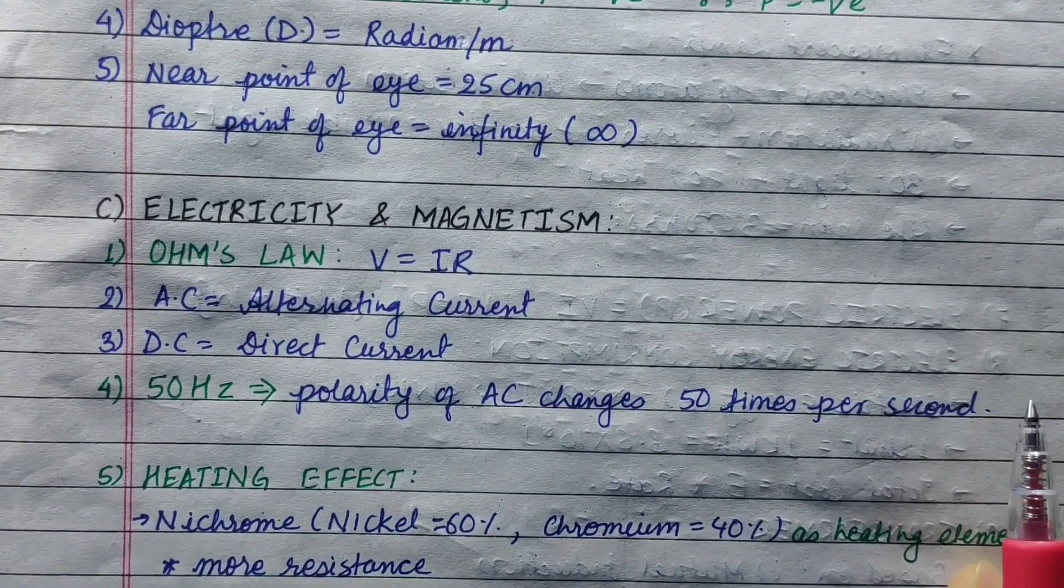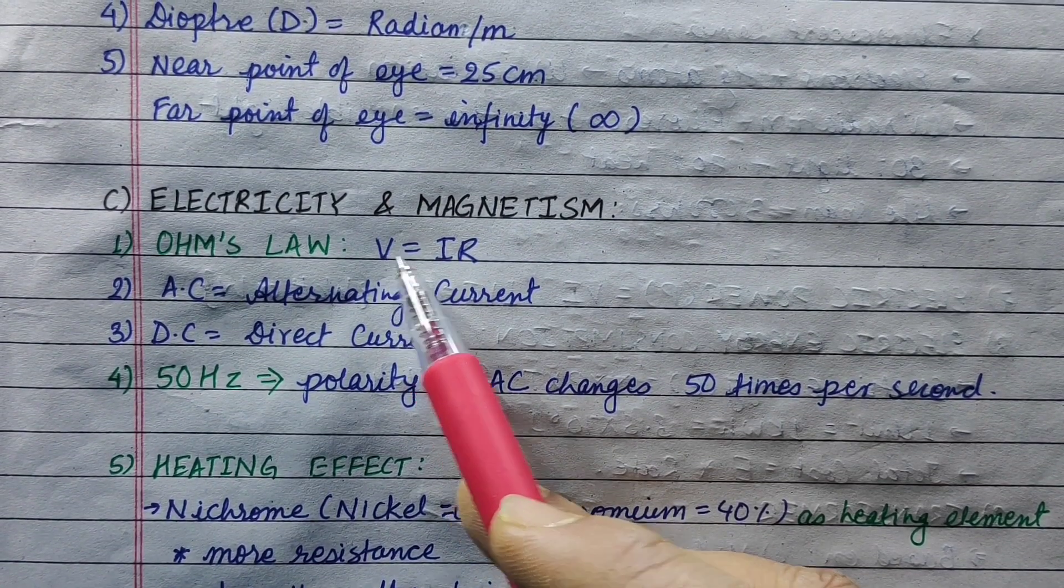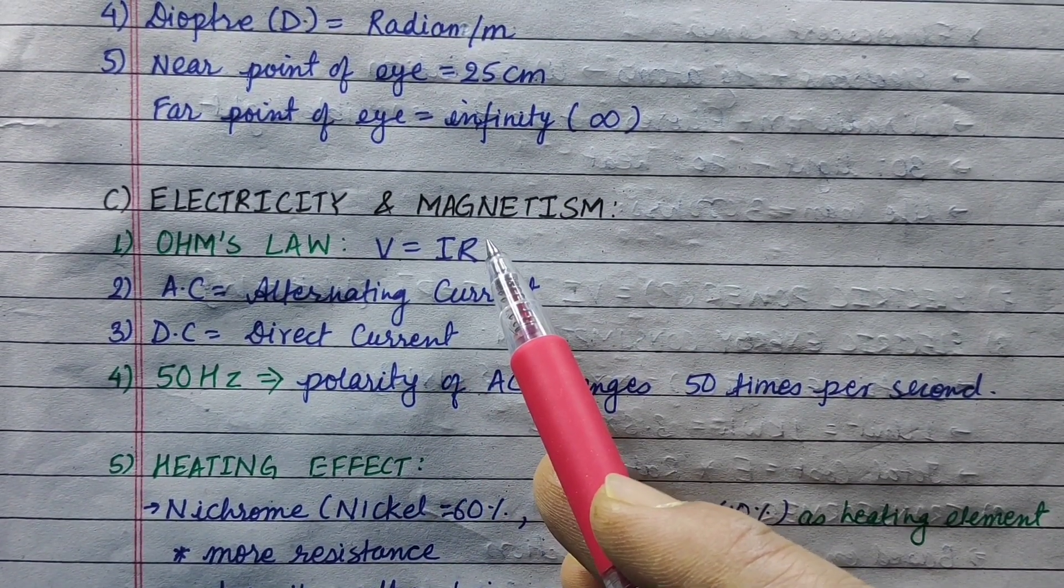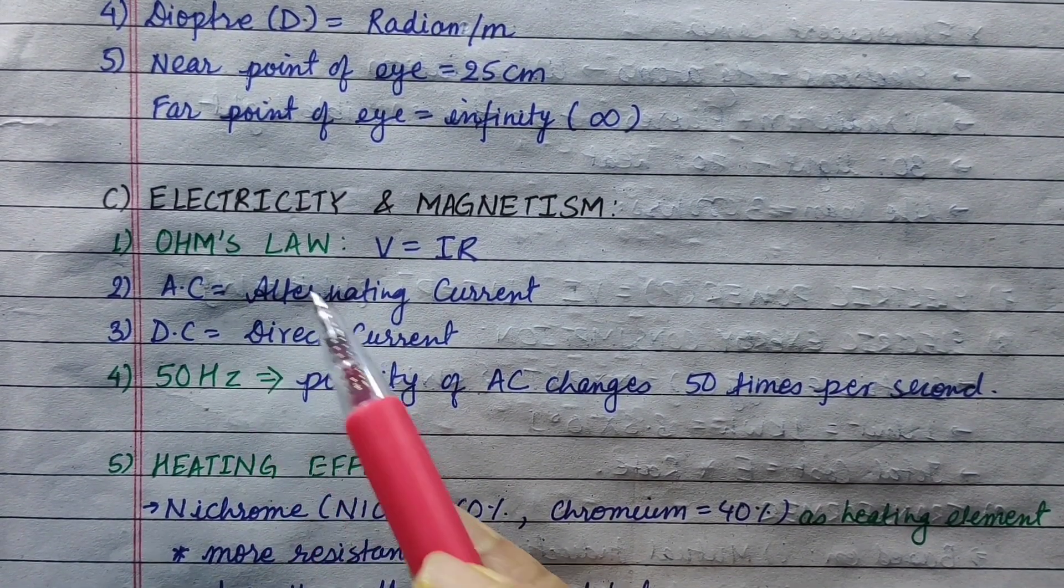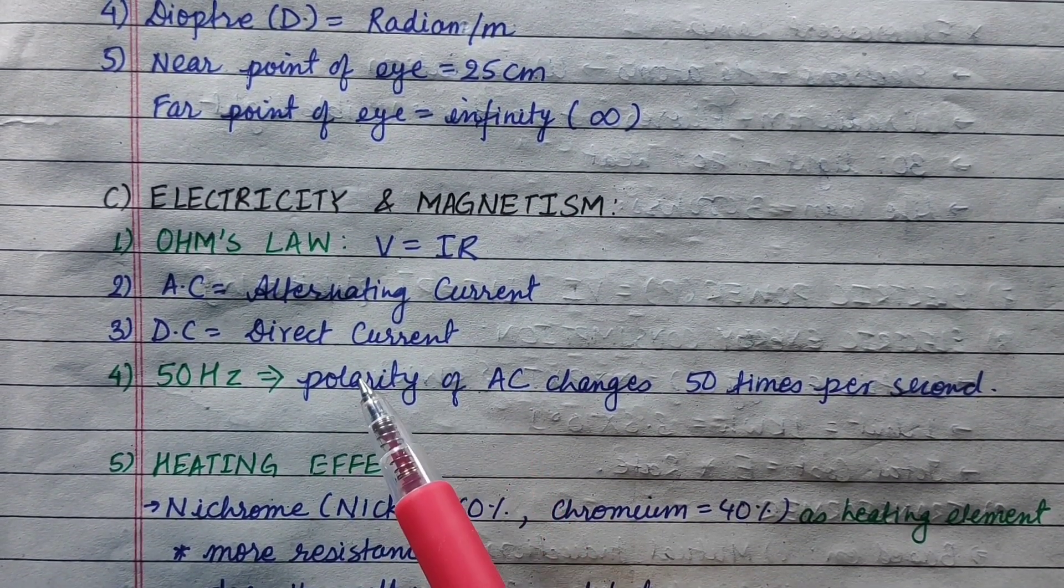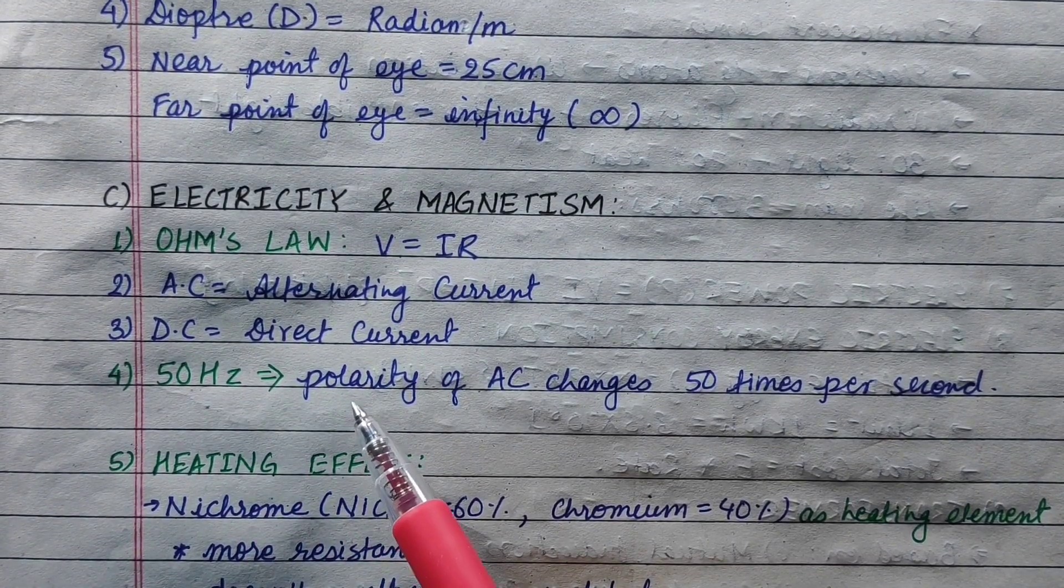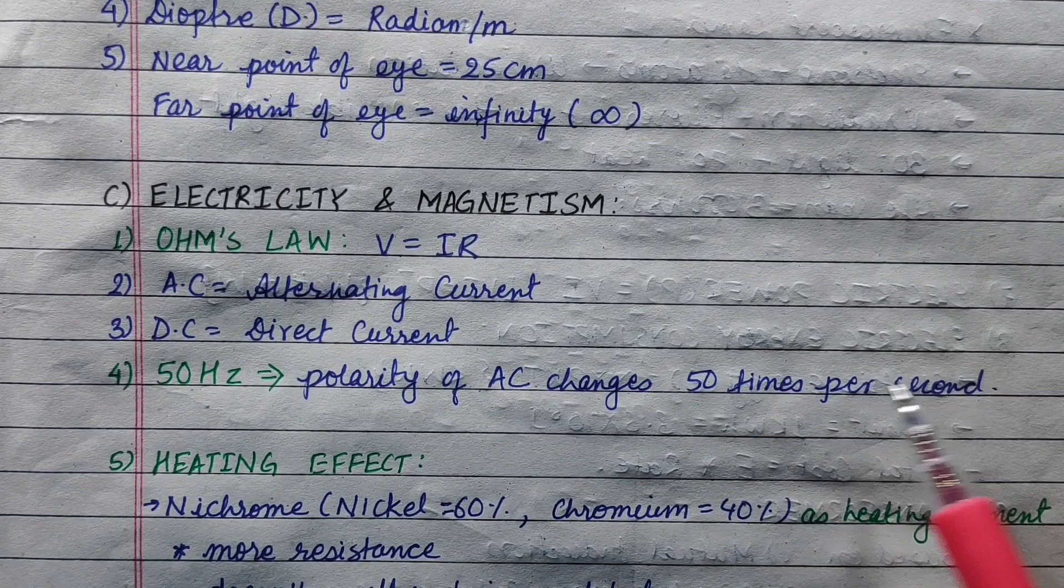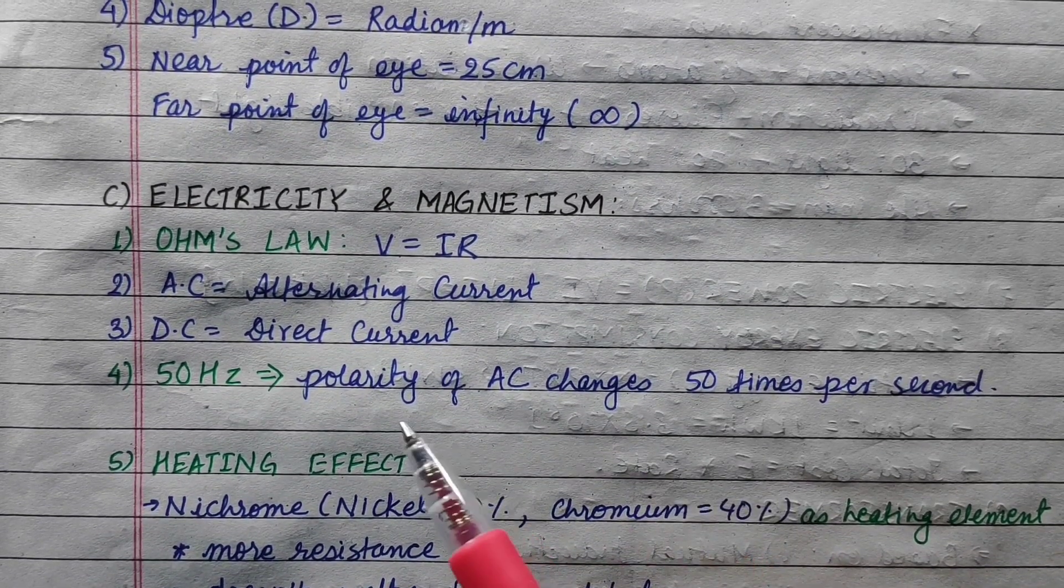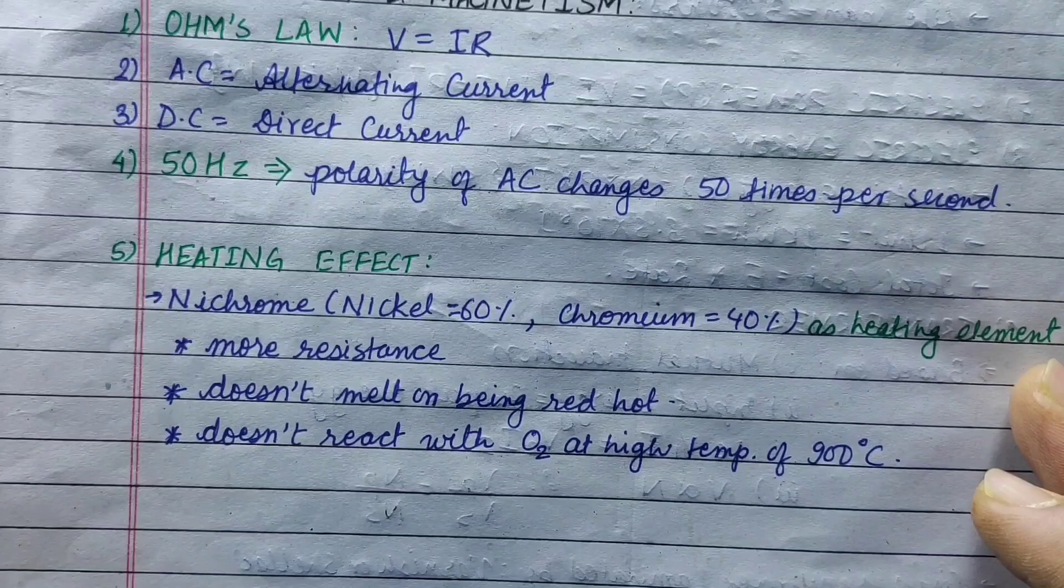In electricity and magnetism, Ohm's law states V equals IR, where V is potential difference or voltage, I is current, and R is resistance. AC is alternating current and DC is direct current. The polarity of alternating current changes 50 times per second, with positive and negative cycles at 50 hertz.